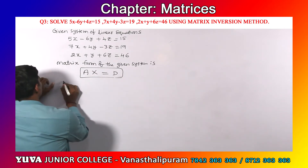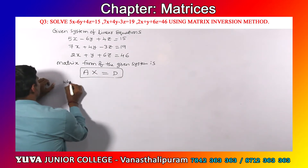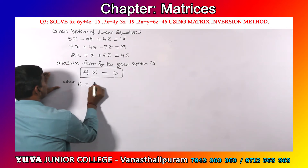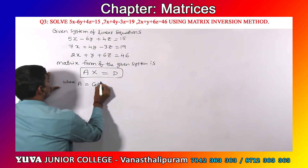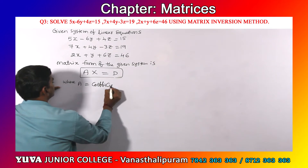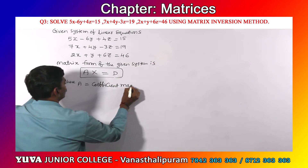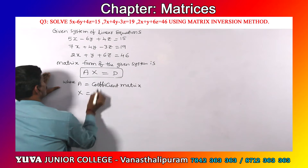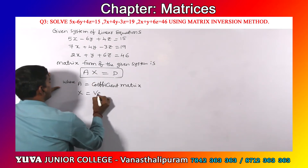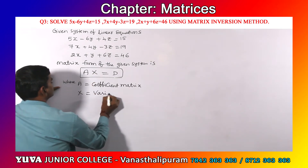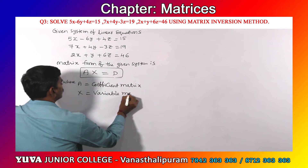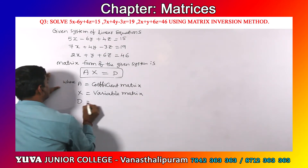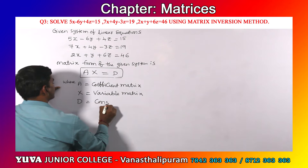Here, A is called the coefficient matrix, X is called the variable matrix, and capital D is called the constant matrix.